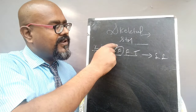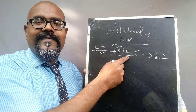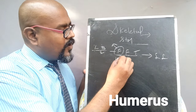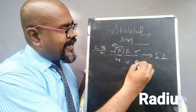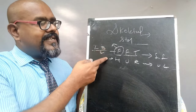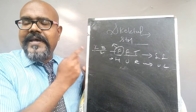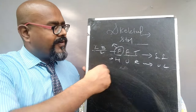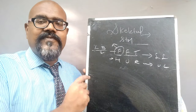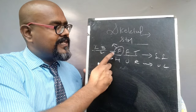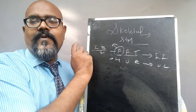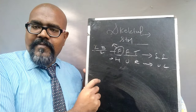The femur is present in the thigh region. So femur, fibula, and tibia are all present in the lower limbs. And humerus, ulna, and radius are present in the upper limbs. These six bones are majorly considered as long bones. Looking at the skeletal system, we can clearly see the size of these six different bones — femur, fibula, tibia, humerus, radius, and ulna.